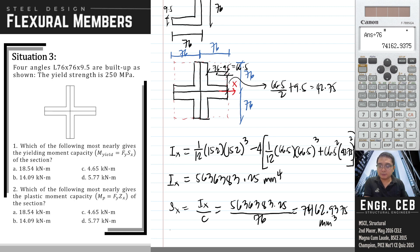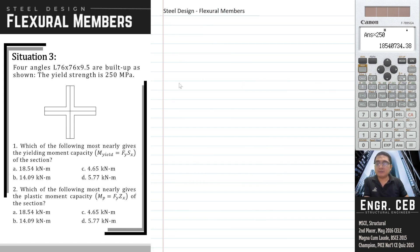Therefore, we can now compute the moment yield. You just multiply the yield strength by the section modulus, and that is 18,540,734.38 in newton-millimeter. Convert this to kilonewton-meter, that is 18.54 kilonewton-meter, and that is letter A.